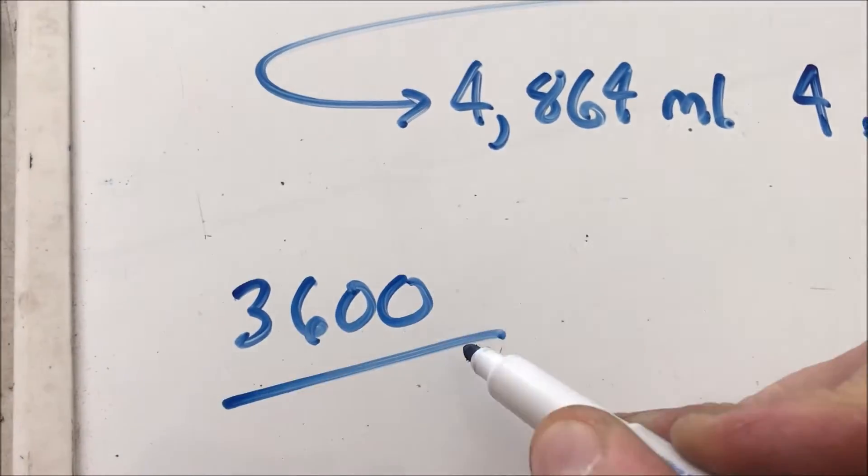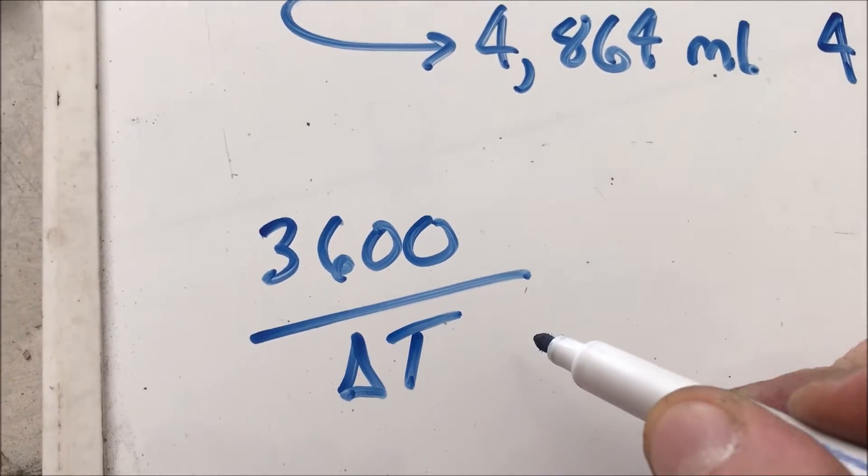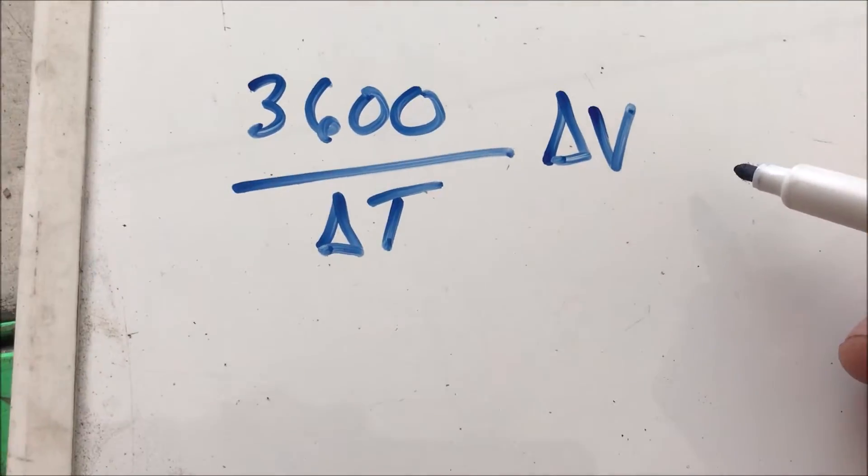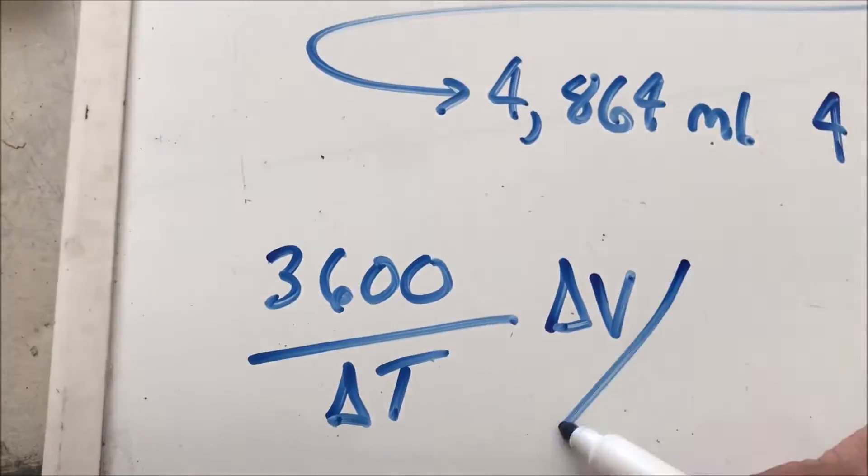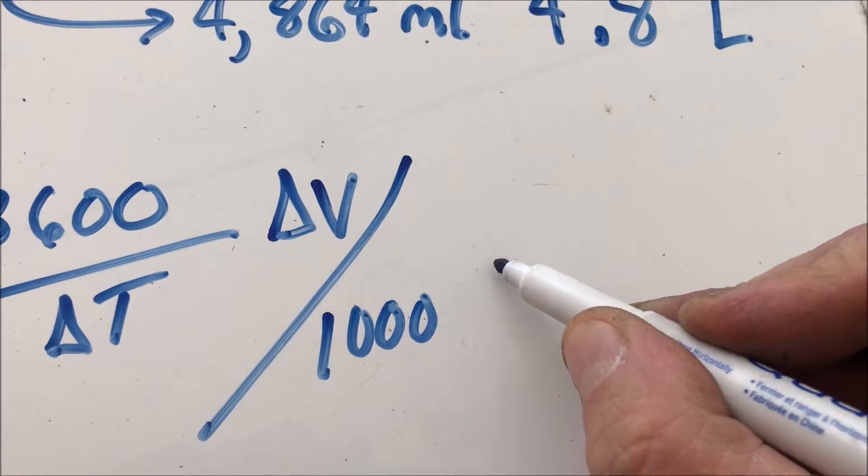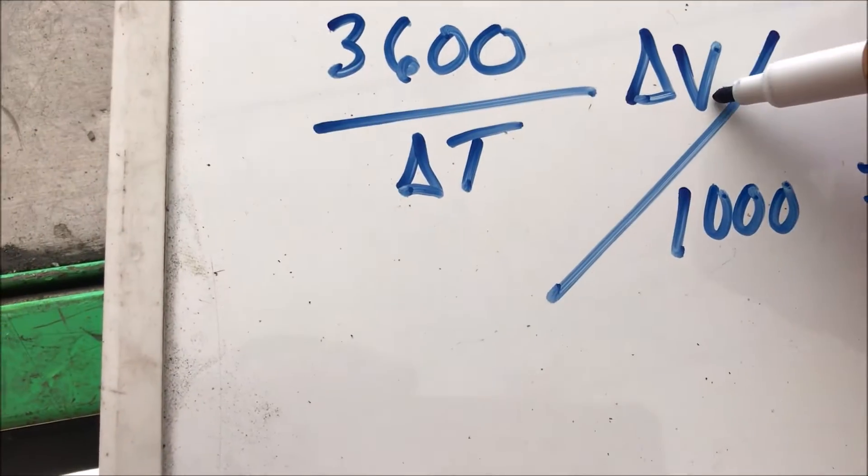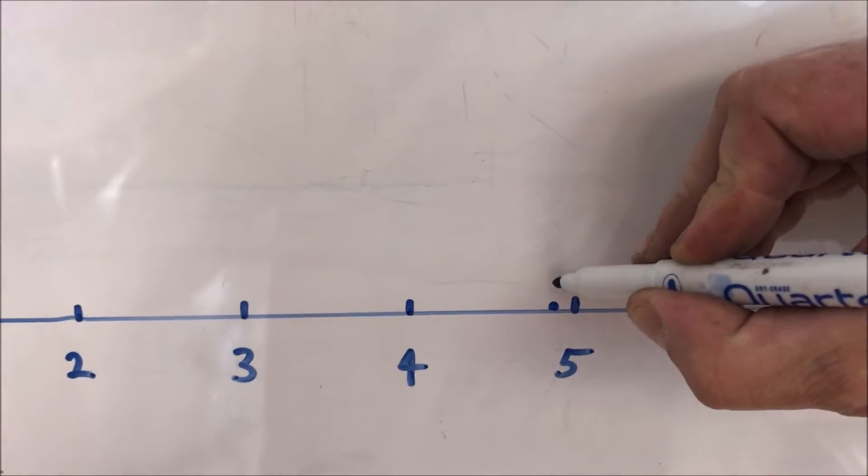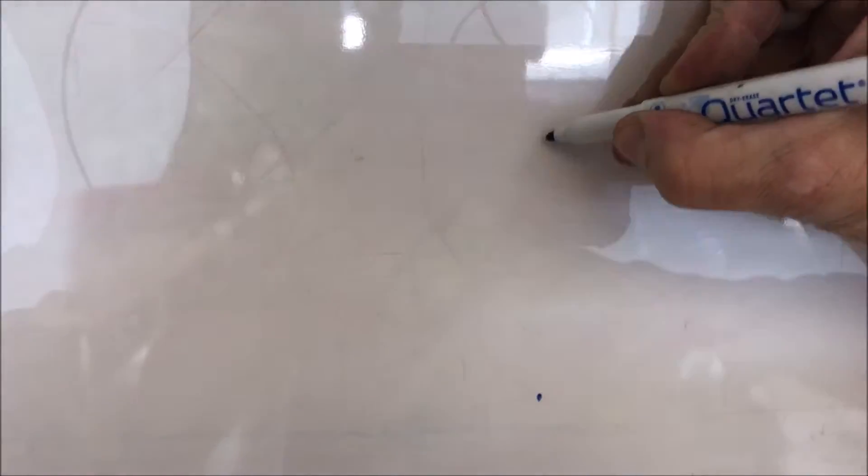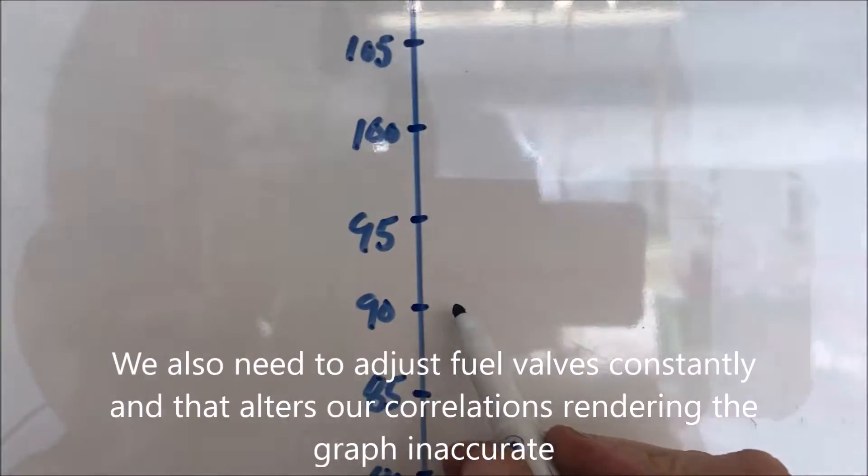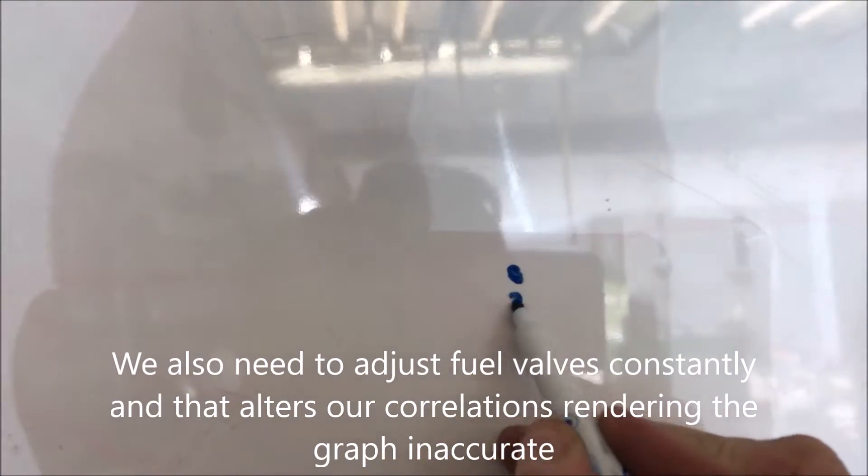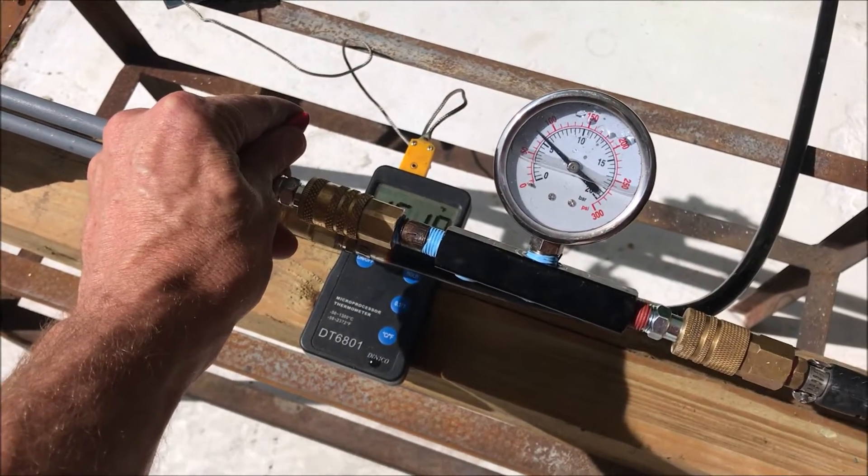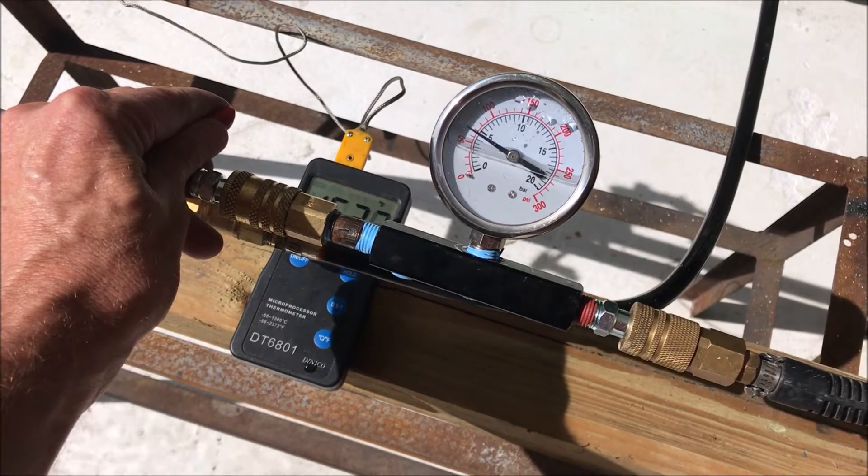So going from that, we can see that the function or formula we use is 3,600 divided by change in time multiplied by the change in volume in milliliters divided by 1,000. That gives us the liters per hour. That's pretty much how this graph was populated. Throughout the process, I checked these figures at different fuel levels and come to find out that the readings change depending on the fuel level in the tank significantly.